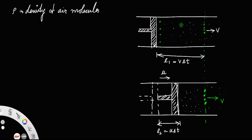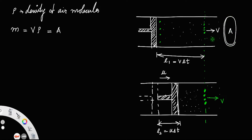Now we need to find the mass of the air molecules in the volume here. Mass m is equal to volume into density. Volume is equal to cross-sectional area A into length l1, so mass m = A·v·delta t·rho. Let us call that equation number 1.